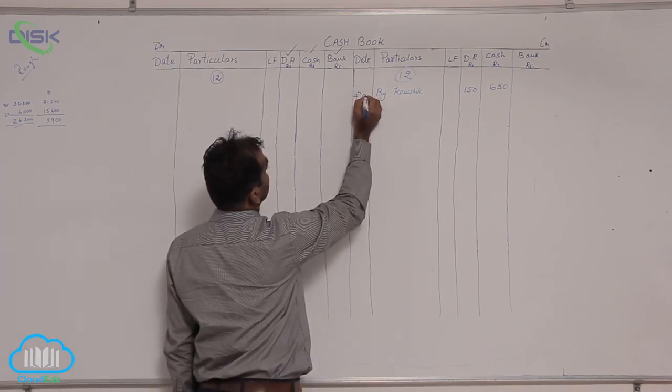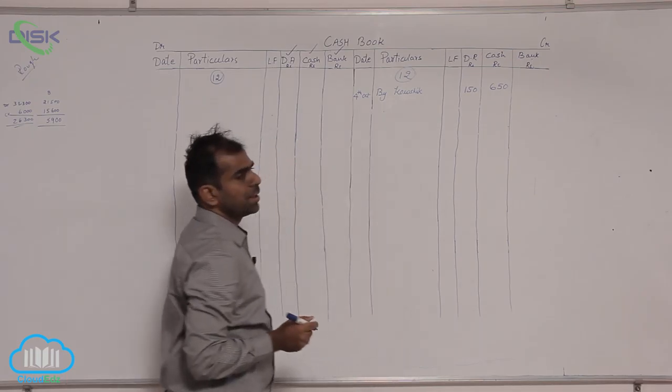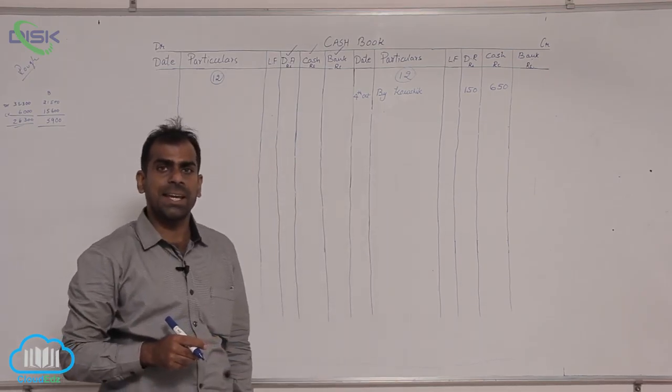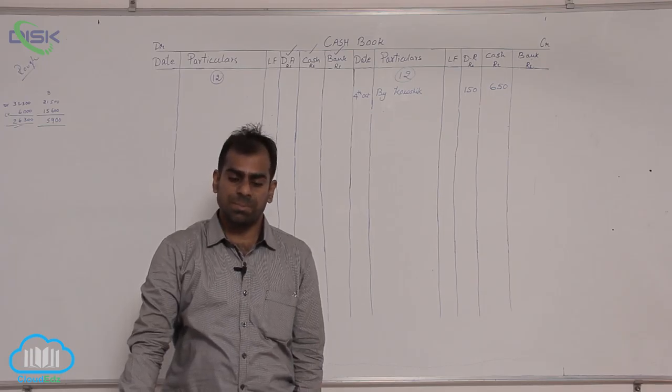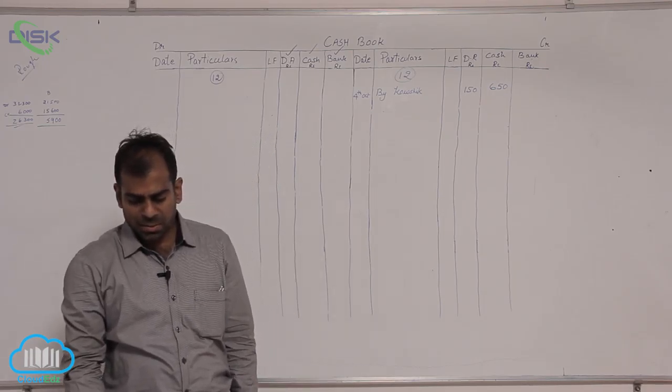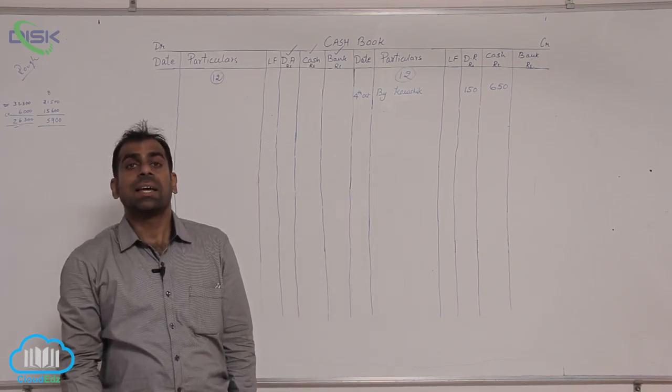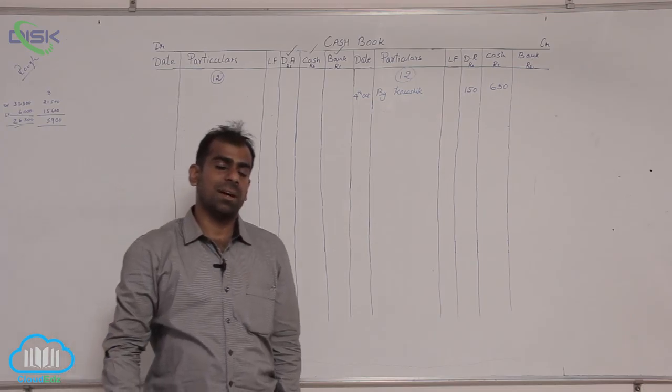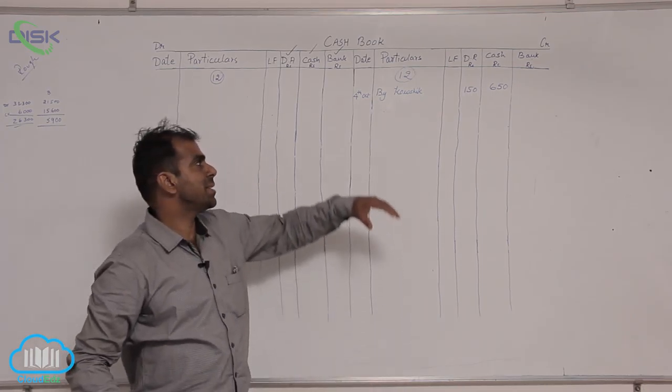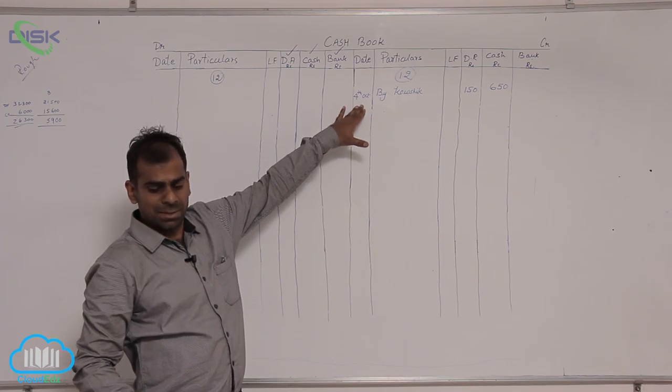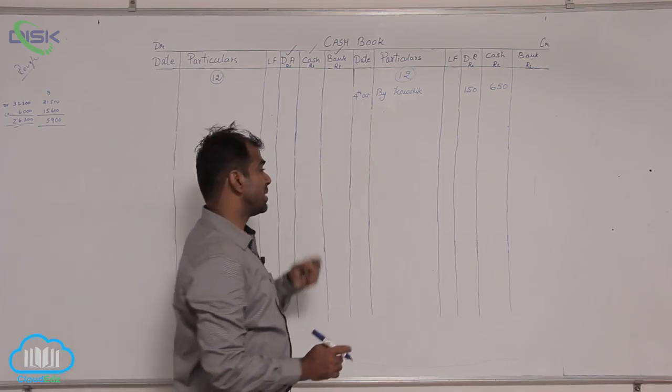Now moving on to the transaction of 8th, it is paid cash to Mokesh, discount received. Cash paid is 350, discount received is 50. You can say it is a repetition of the same transaction, so directly I will enter the amount.